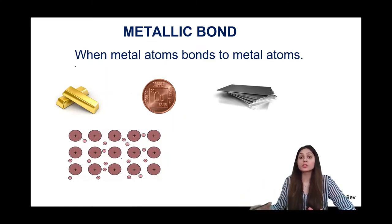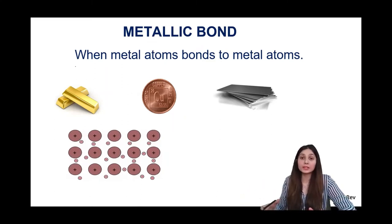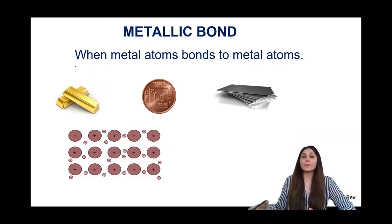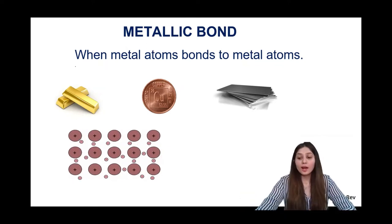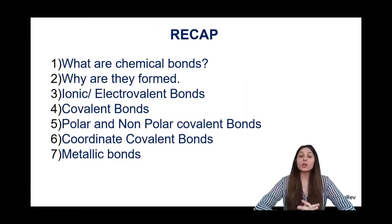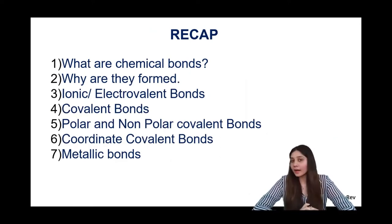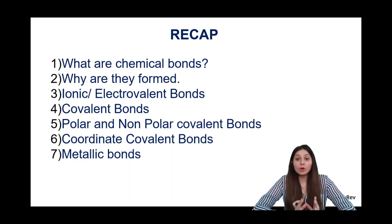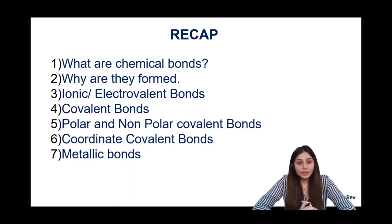The metallic bond is also called an electrovalent bond because the positive metal kernel is attracted by the electrons around it. So in this video we have discussed what chemical bonds are, why they are formed, what ionic bonds are, covalent bonds including polar and non-polar, coordinate bonds, and metallic bonds.